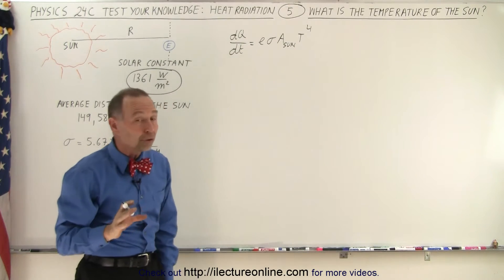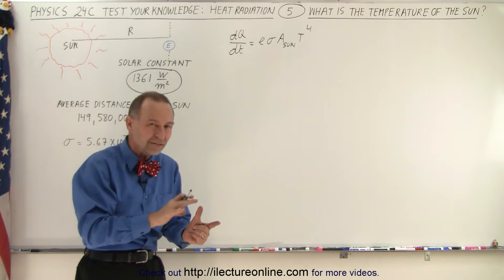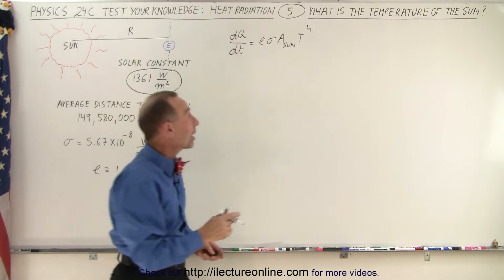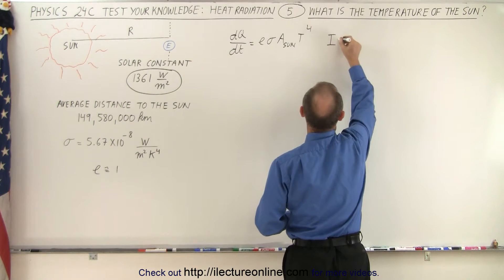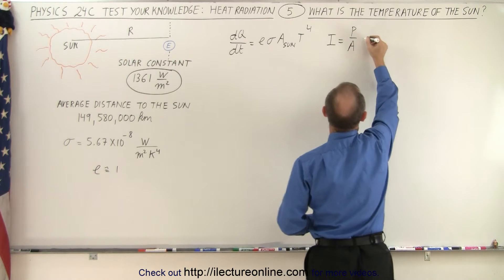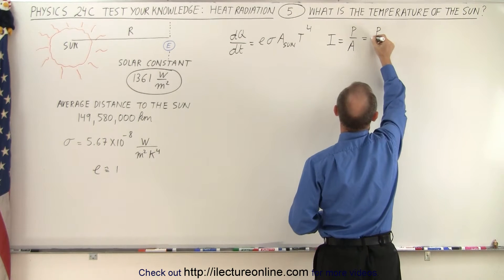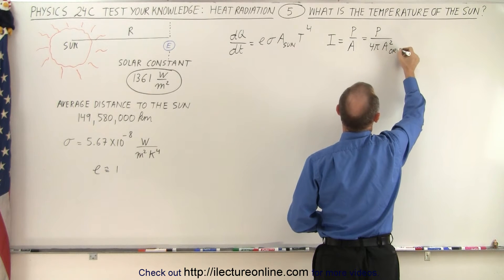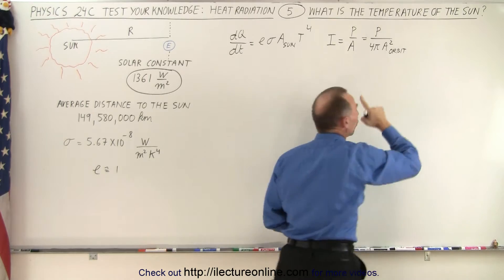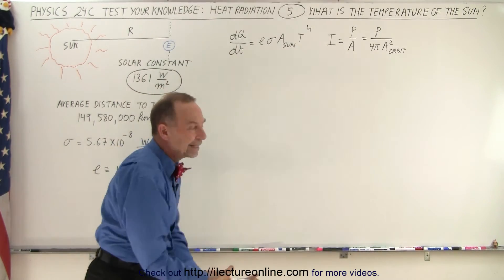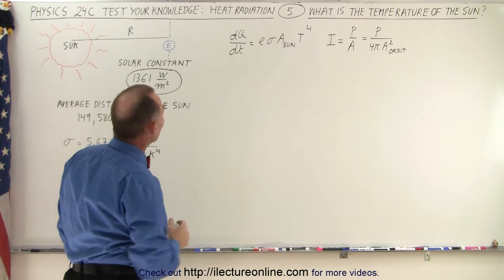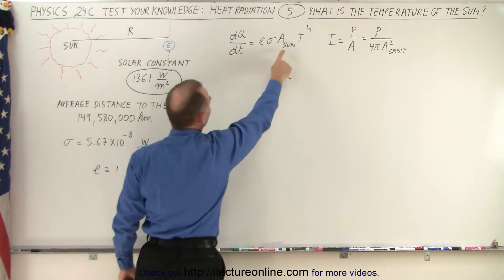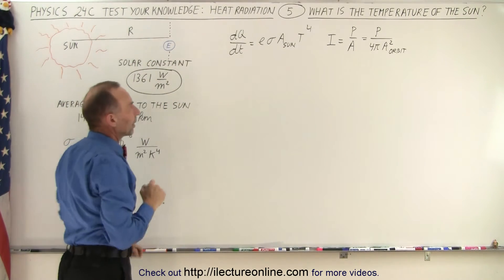We also probably need the equation that relates the intensity of radiation to the power of the object at a distance away from the object. So we can say that the intensity is equal to the power divided by the area, which in this case would be the power of the sun divided by 4πr², and that would be the area of the orbit of the earth, basically the area of a sphere made by the radius of the orbit of the earth.